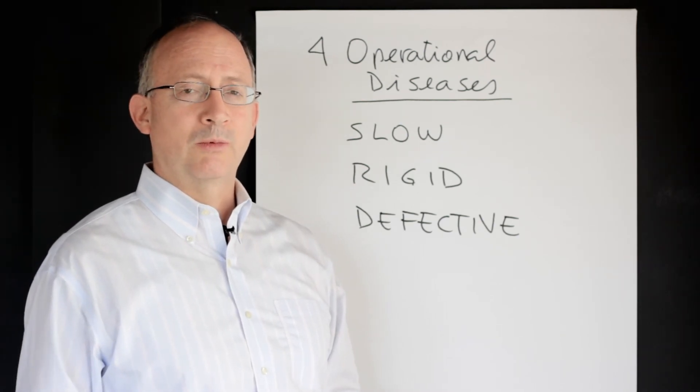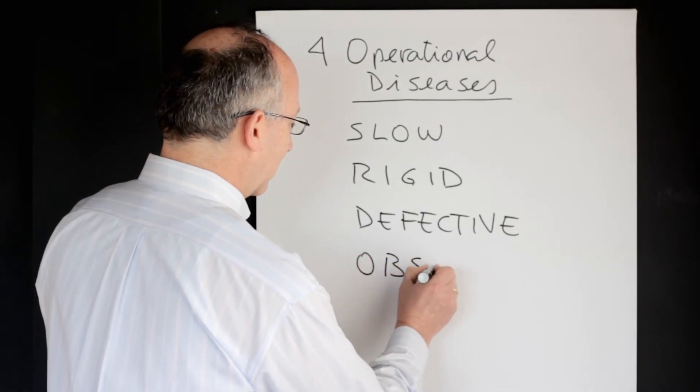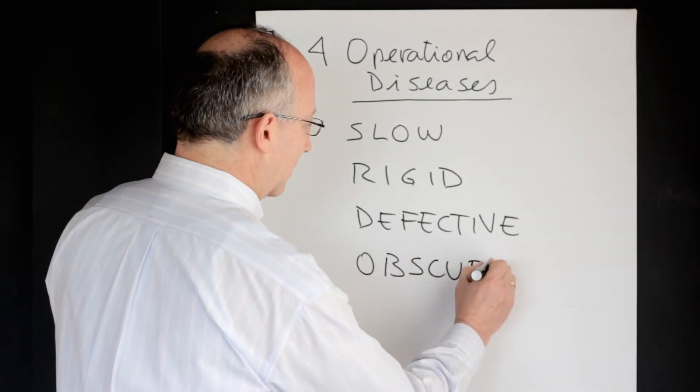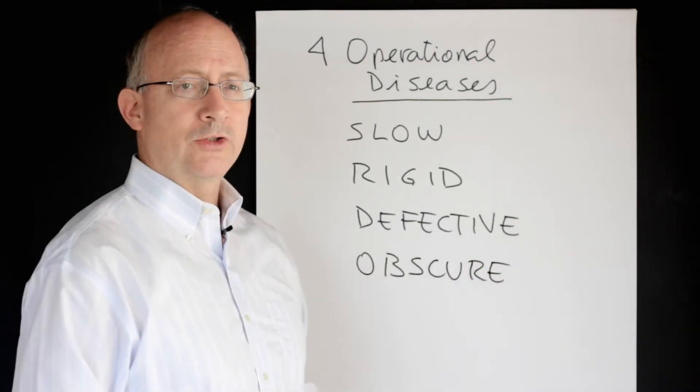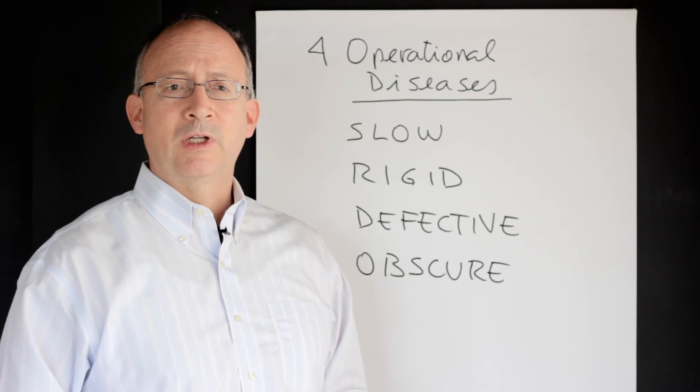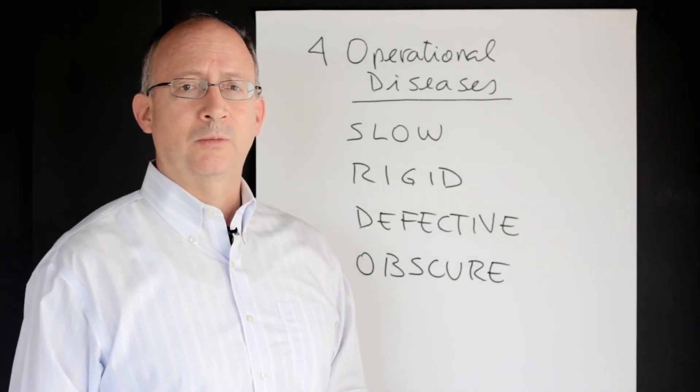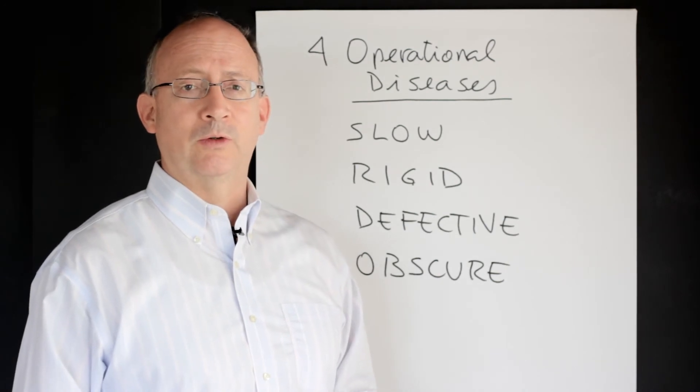The fourth example of an operational disease is the one that we call an obscure operation. An obscure operation is one that may be free of the previous diseases, but it is one that still creates anxiety and lack of customer satisfaction with the service.